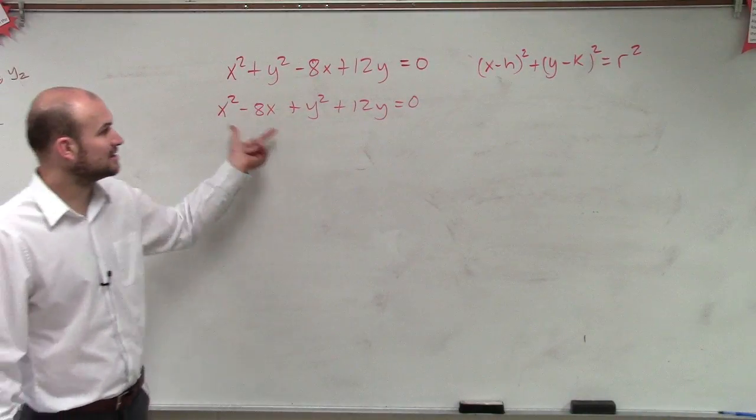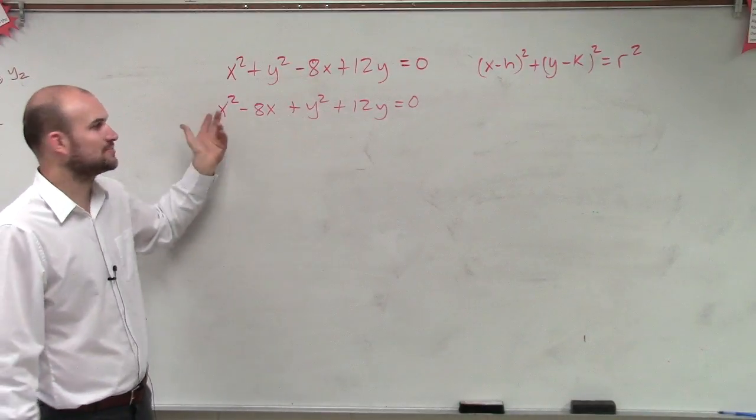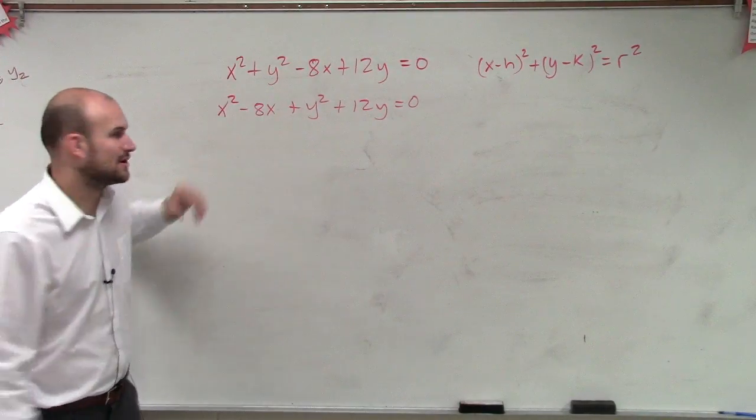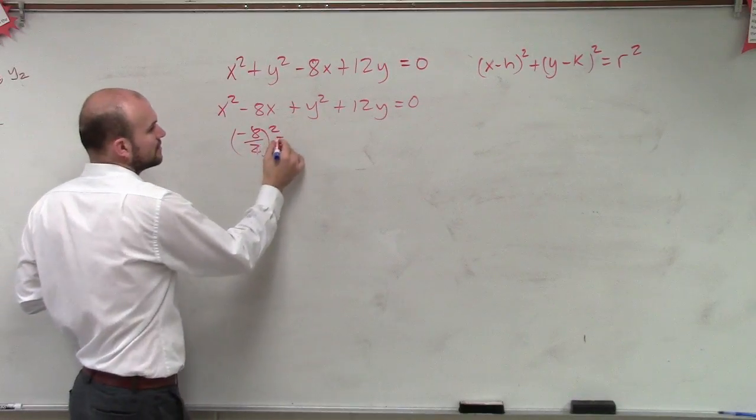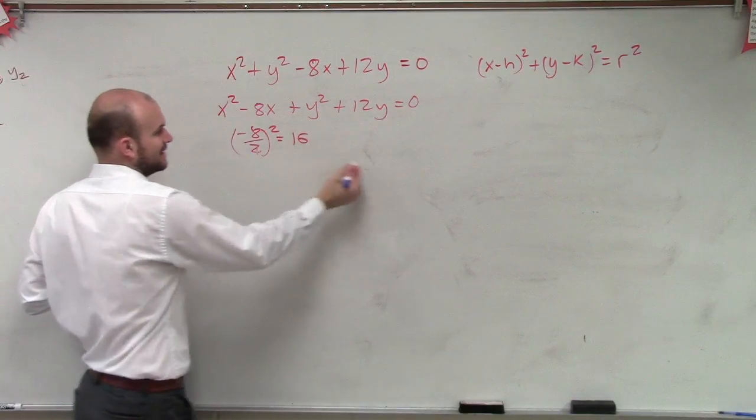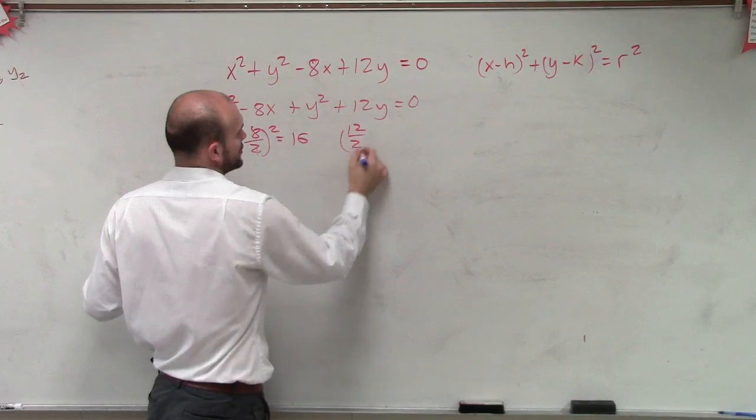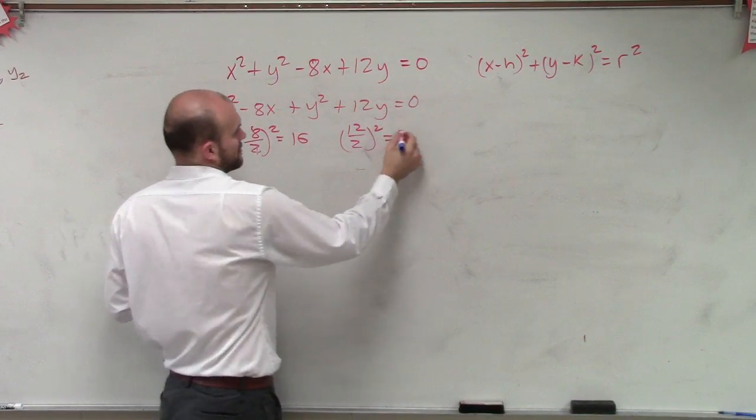Now, I can complete the square for each of these separately. Fortunately for us, we don't have any coefficients. So I can just do this one: negative 8 divided by 2 squared, which equals 16. This one's 12 divided by 2 squared, which equals 36.